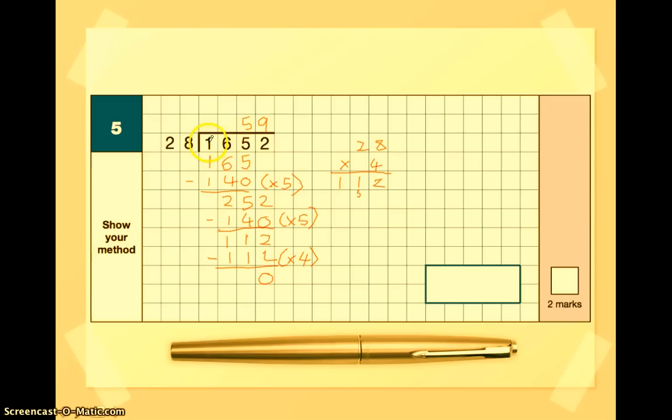For when we got down to tens, 165, we subtracted 5 lots of 28. That's why the 5 goes above there. And for the next section, we subtracted 5 lots of 28, then a further 4. So we subtracted 5 lots and then 4 lots. 5 add 4 is 9. Altogether, we subtracted 9 multiples of 28 from the final number, giving us a final answer of 59.